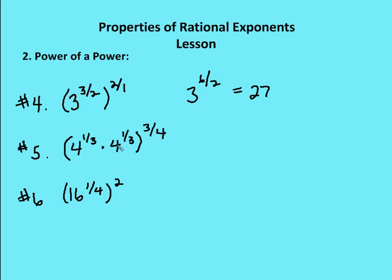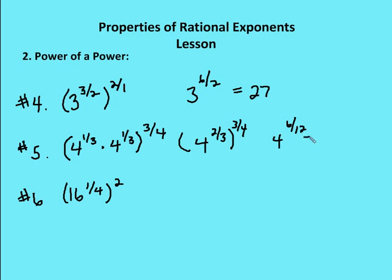Now I'm going to include some other properties we've already used. I have 4 to the 1 third times 4 to the 1 third. I keep the base the same and add the exponents when multiplying, giving me 4 to the 2 thirds. Then I take that all to the 3 fourths. That leaves me with 4 to the 6 twelfths, which is the same as 4 to the 1 half. And 4 to the 1 half is the same as the square root of 4, which equals 2.